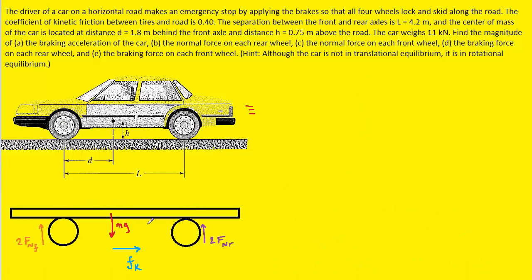For part B, we've redrawn the car showing all forces acting on it. At the center of mass we have the downward gravitational force. At the rear wheels the ground pushes up on both wheels, represented as two times the normal force of the rear wheels (2Fnr). Similarly at the front, we have two times the normal force of the front wheels (2Fnf). Finally, the kinetic frictional force points to the right, slowing the car down.